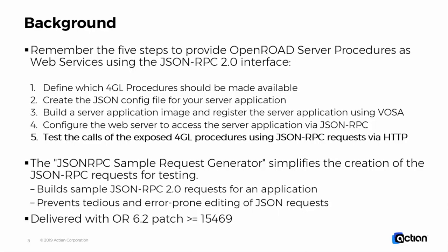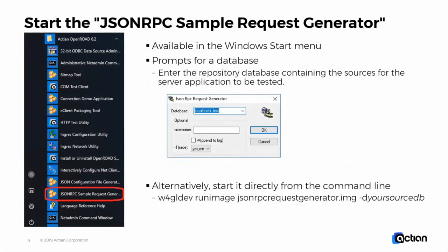Number 15469 or greater. To use the utility, you start from the Windows Start menu. There you choose the Actian OpenROAD 6.2 program group, and within it you will find the JSON RPC sample request generator link. Once you click on it, you will be prompted for a database.